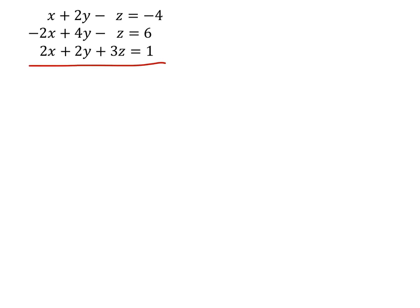To do this, I'm going to add both of these two equations together. So I'd have a negative 2x plus 2x, and there you go, we've eliminated the x's. Then we've got 4y plus 2y which would give us 6y, a negative 1z plus 3z would be a positive 2z, and that would be 6 plus 1, which is 7.